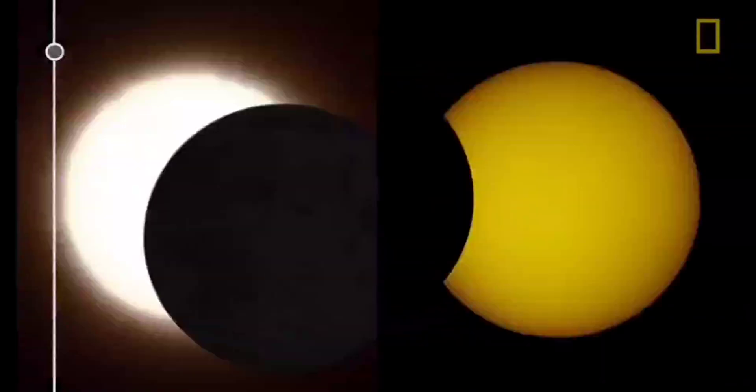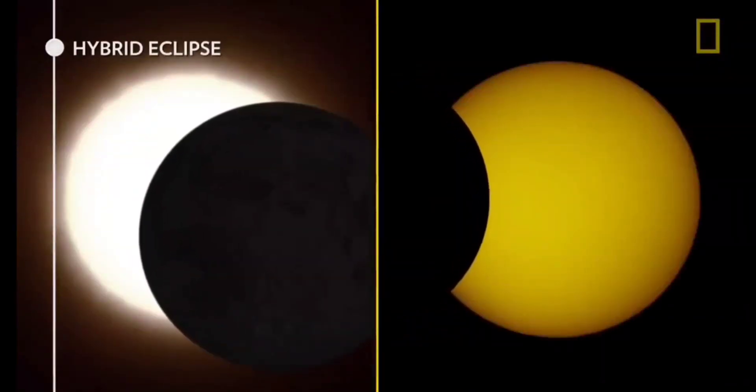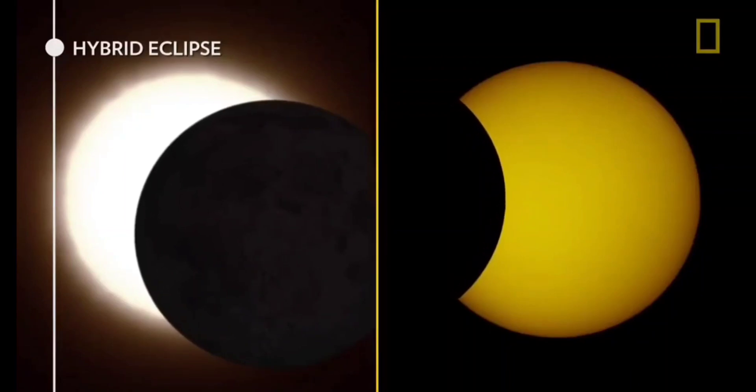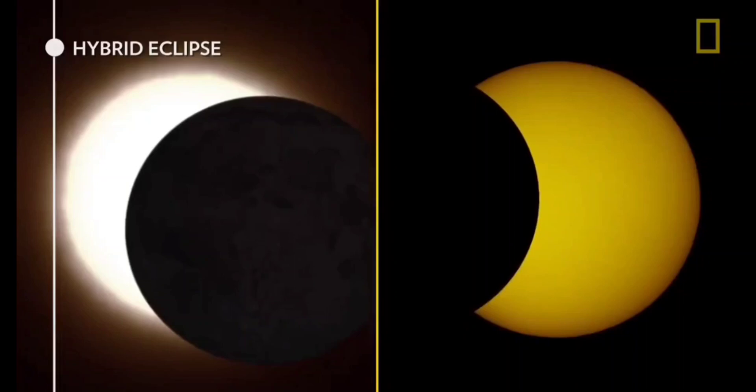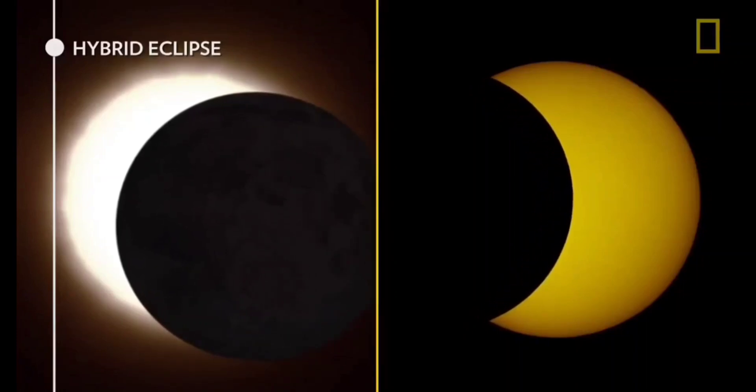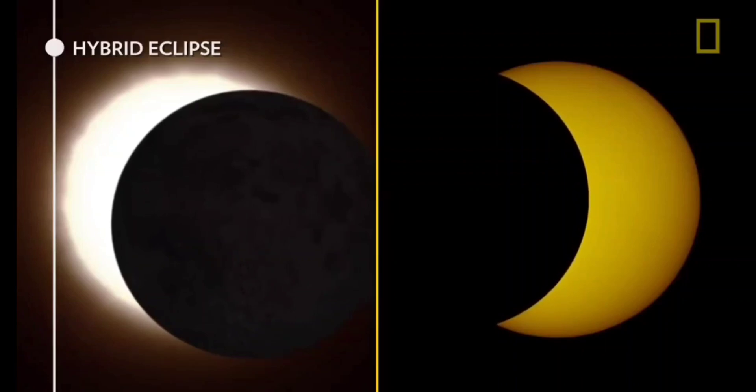The last one will be the hybrid solar eclipse. This is the rarest type of eclipse. In this, the earth's curvature brings some sections of the eclipse path into the moon's umbra.